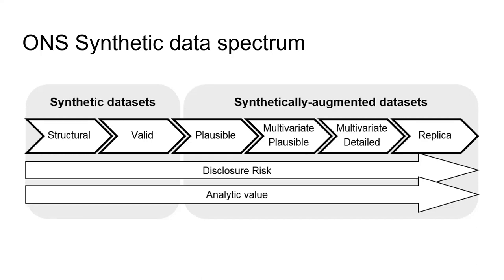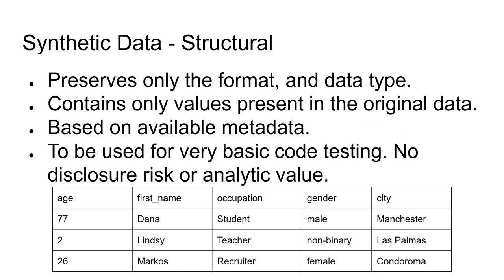It is expected that synthetic data does not have any disclosure risk — that's why the ONS paper has this new term 'synthetically augmented data sets' tacked on. To start with, we have structural synthetic data, which is data identical only in structure to the real data set. It preserves only the format and data types of columns; variable names need to be identical to the real data. There's no noise added and no magic here — if you had personal data, it would still be exposed. This is supposedly constructed only on available metadata: mean ages, lists of valid occupations, valid cities, valid genders.